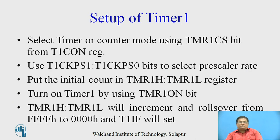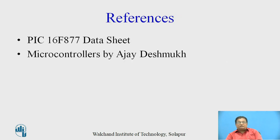For setup of Timer 1: first select timer or counter mode, then use the prescaler bits to select the prescaler rate, then put the initial count in the timer register, and turn on Timer 1 using the Timer 1 on bit. The timer register will increment and roll over from FFFF to 0000, and the Timer 1 interrupt flag will be set. References used: the PIC data sheet and Microcontrollers by Ajay Deshmukh. Thank you.